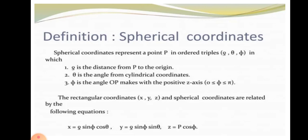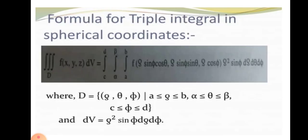Z is equal to ρ cosine φ. The formula for the triple integral in spherical coordinates is: the triple integral of f(x, y, z) dV, which equals the triple integral of f(ρ sinφ cosθ, ρ sinφ sinθ, ρ cosφ) times ρ² sinφ dρ dθ dφ.